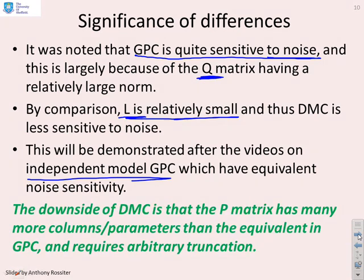The downside of DMC is that the P matrix has got lots and lots of columns. You remember, you had to take as many columns as was necessary until the truncation error became minimal. Now, we didn't really define what we meant by minimal, but it could mean a lot of columns. It could be 30 or 40 columns as opposed to GPC, where the P matrix might only have two or three columns.